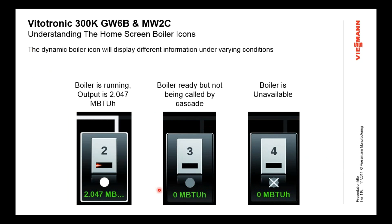Each boiler's status is individually shown on the screen. Boiler number two, for example: a white line at the top tells me it's running, I can see the burner is on, and a white dot tells me the cascade is using this boiler — it's running because the cascade commanded it. I can see how many BTUs it's currently producing. Boiler number three has a gray dot — that means it's ready to go but the cascade doesn't currently need it, so no burner is on and zero BTU output. Boiler four has an X — the cascade can't use it; it might have its power off, be in a fault or alarm, or someone may have it in service mode.